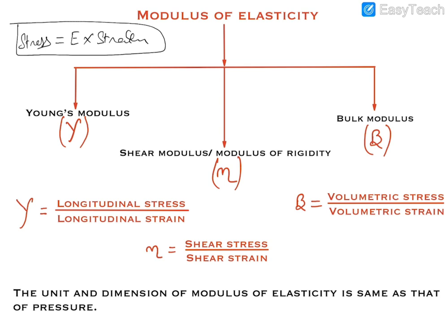Shear modulus applies when a body is deformed such that its upper surface is shifted compared to the lower surface, while the lower surface remains at rest. The ratio of that shear stress and shear strain is called shear modulus or modulus of rigidity. The third one is bulk modulus.